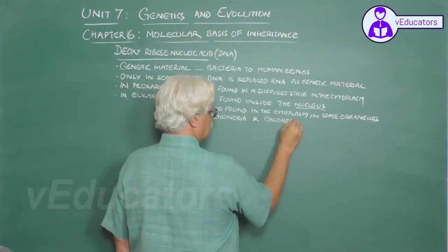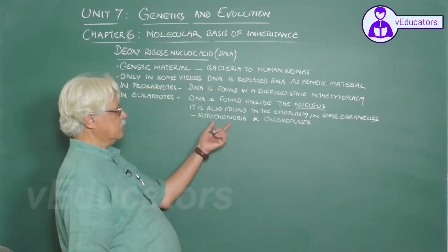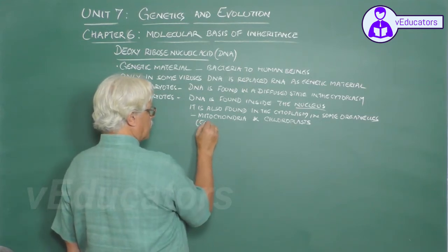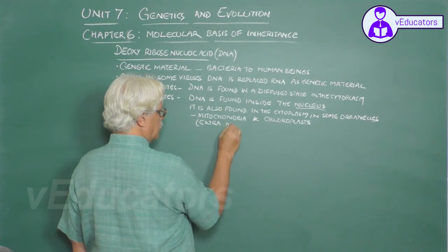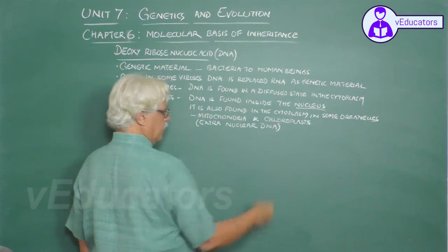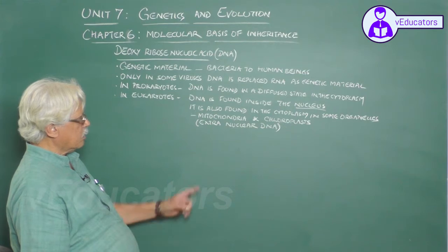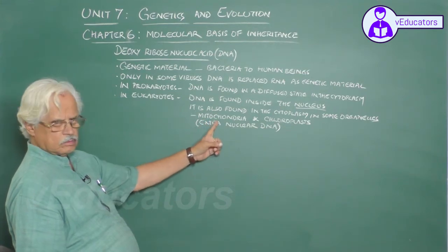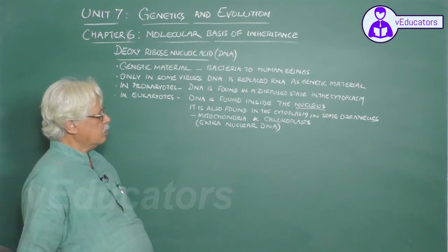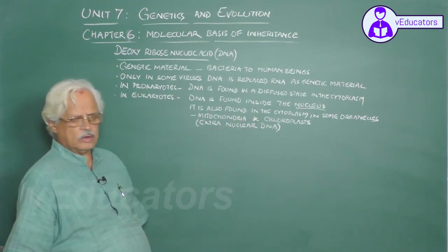These are the two characteristic cell organelles that contain DNA and this is known as extranuclear DNA or cytoplasmic DNA. The one found in mitochondria is called mitochondrial DNA. The one found in chloroplast is called chloroplast DNA. Otherwise, DNA is found inside the nucleus.